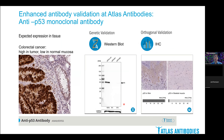At Atlas Antibodies, we use both standard and enhanced validation in an application-specific manner, meaning that we perform enhanced validation in each application that a product is approved for. Here you can see an example of the anti-P53 monoclonal antibody that shows the expected expression pattern in tissues, where we see that tumor cells have strong aberrant expression in the nuclei, while the control and normal cells have only very low levels. In the Western blot, you can see an example of genetic validation, where the expected band is attenuated in siRNA knockout cell lines. And finally, in immunohistochemistry, we see expression in the basal cell layer in the skin — the high-expressing tissue — and absence of staining in skeletal muscle, which should be negative.